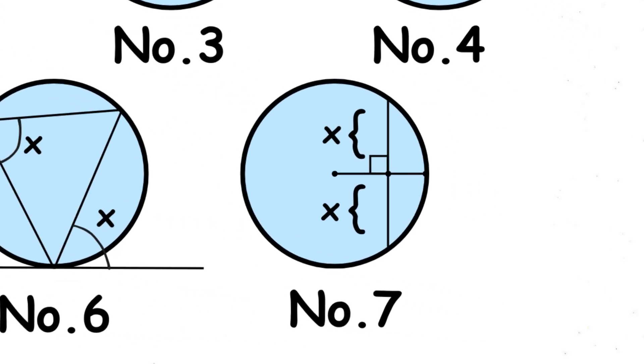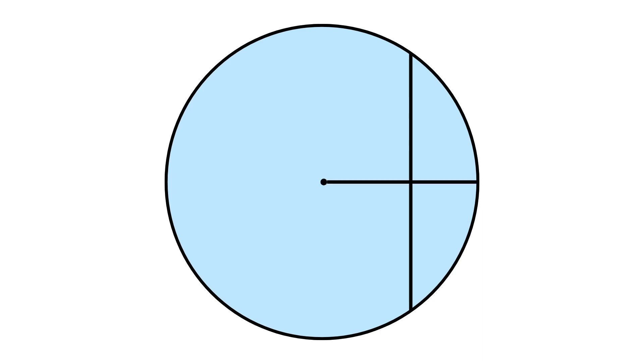The seventh and final circle theorem is the chord of a circle. The perpendicular from the center of a circle to a chord bisects the chord, meaning it splits it into two equal parts.